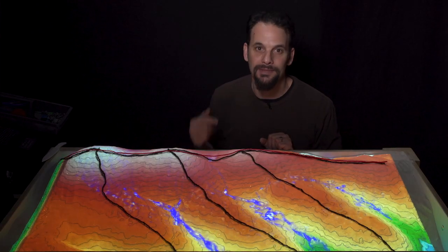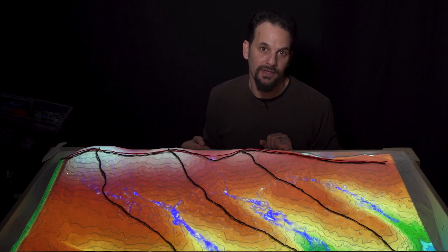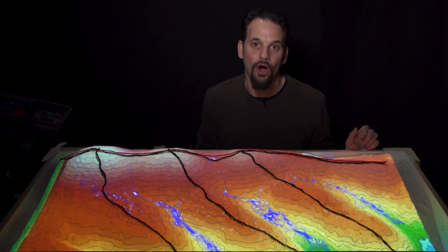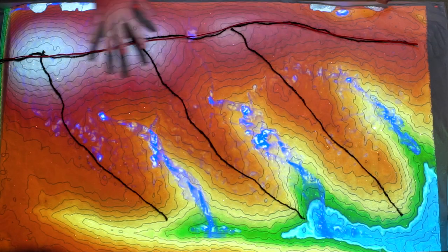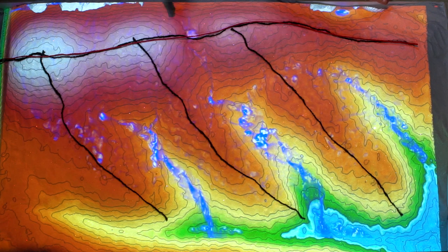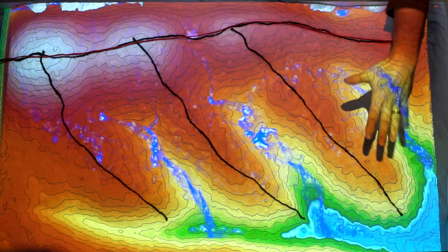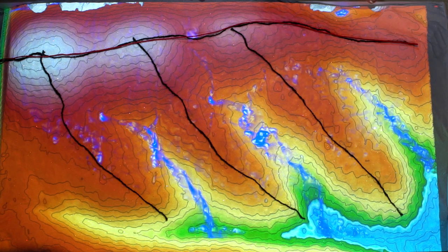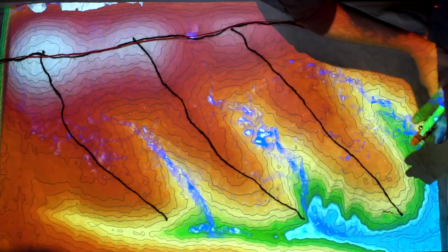I prefer to call them the spine and the arms, because it kind of makes more sense to my mind than main and primary. But the thing to understand about this is that the spine at one scale is the arm at another. If I'm looking at this whole landscape, then this is the main ridge, or the spine, and these are the primary ridges, or the arms. But I can zoom in to this primary ridge right here, and this can be the spine, and I can also have the arms of primary ridges coming off of this one.